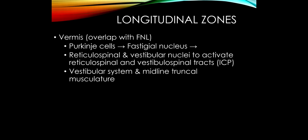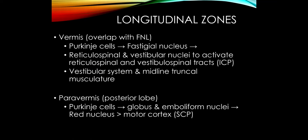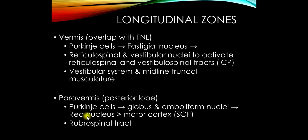As we move out more laterally, the paravermis has Purkinje cells that communicate with the globose and emboliform nuclei — the next two deep cerebellar nuclei. A lot of this goes to the red nucleus, and some can also go up to the motor cortex. Moving out even more laterally, we are influencing another upper motor neuron pathway: the rubrospinal tract, originating from the red nucleus.